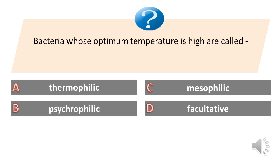Bacteria whose optimum temperature is high are called: A. Thermophilic. B. Psychrophilic. C. Mesophilic. D. Facultative. Answer is A. Thermophilic.